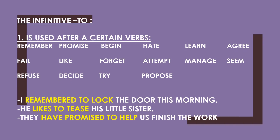The infinitive 2 is used after certain verbs like remember, fail, refuse, promise, like, decide, begin, forget, try, hate, attempt, propose, learn, manage, agree. For example: I remember to lock the door this morning. He likes to tease his little sister. They have promised to help us finish the work. Remember is one of the certain verbs used before infinitive 2.